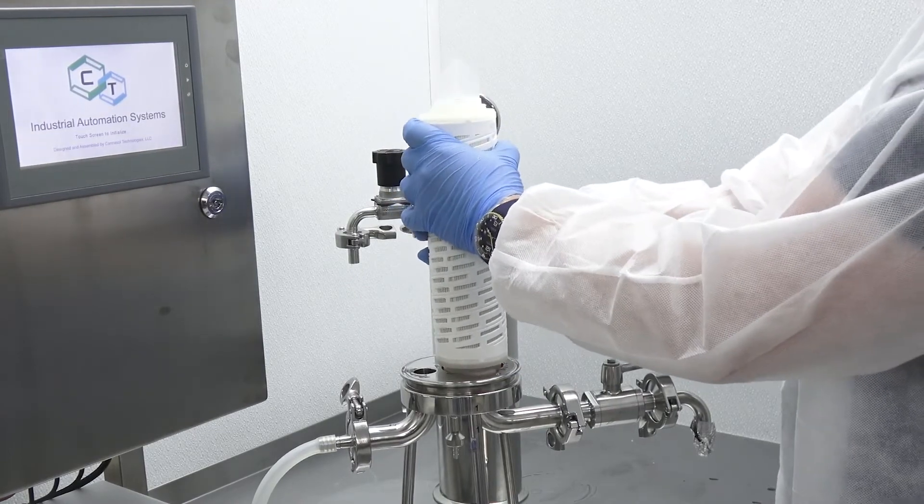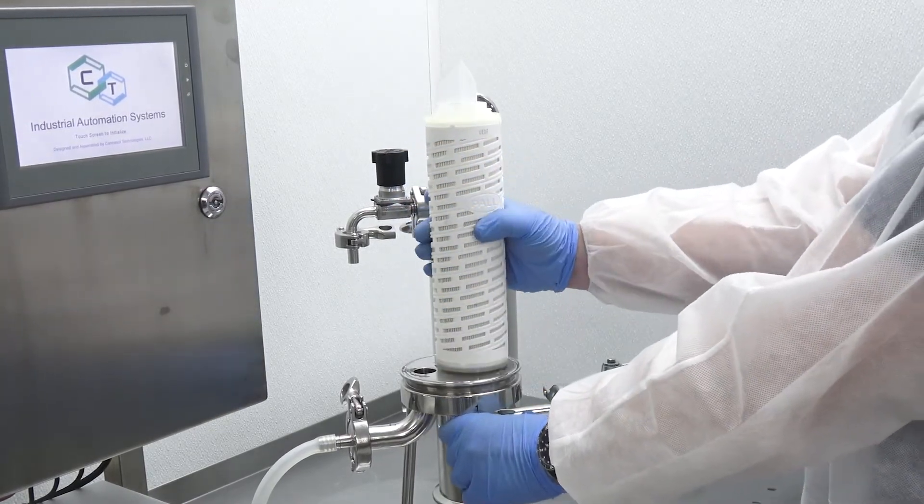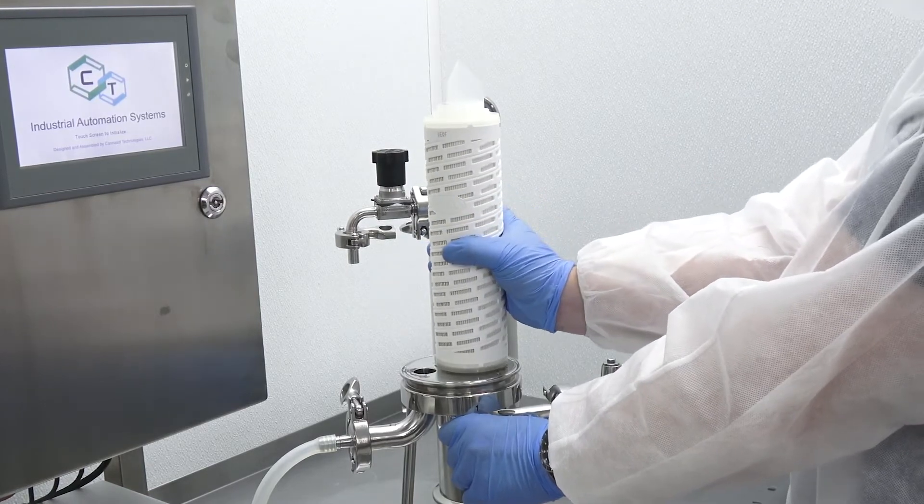Before a run, you'll need to install a sanitized 10-inch Code 7 filter cartridge, ideally rated at 0.2 microns.